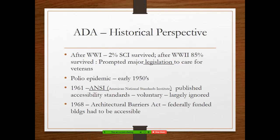In the past, the ADA — the Americans with Disabilities Act — this is how it came into being. After World War I, only 2% of spinal cord injured patients survived. After World War II — so in the 1940s and early 1950s — 85% of spinal cord injured patients survived. What a big difference from 2% to 85%.